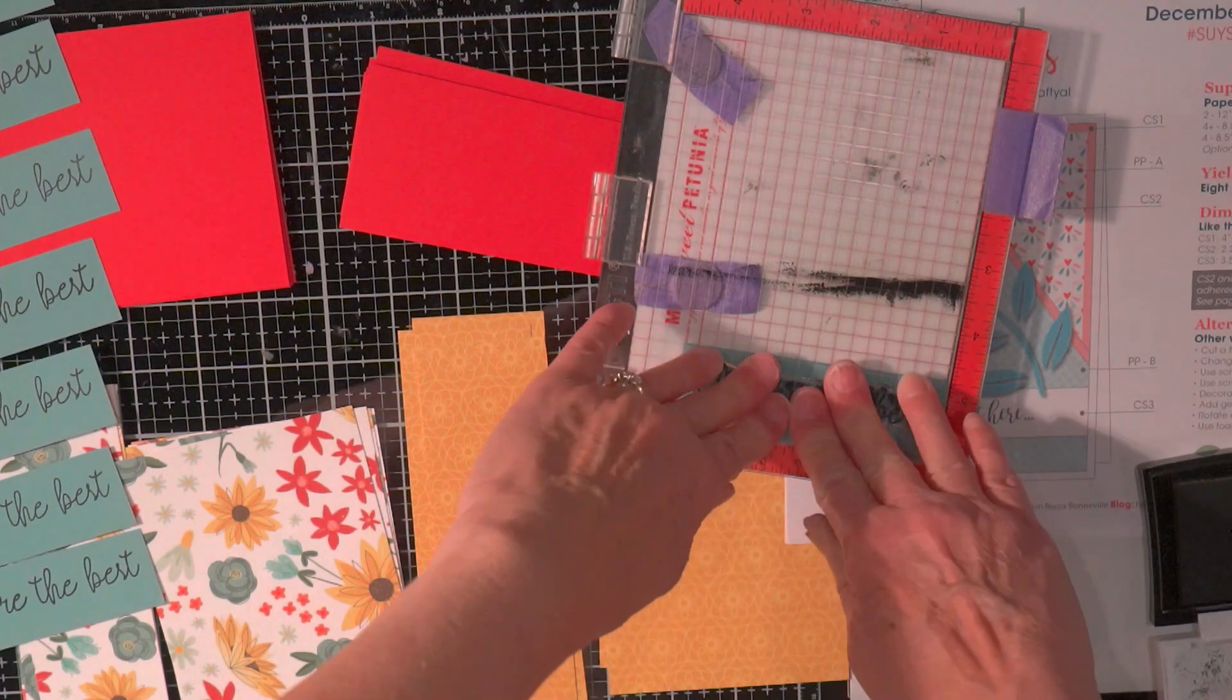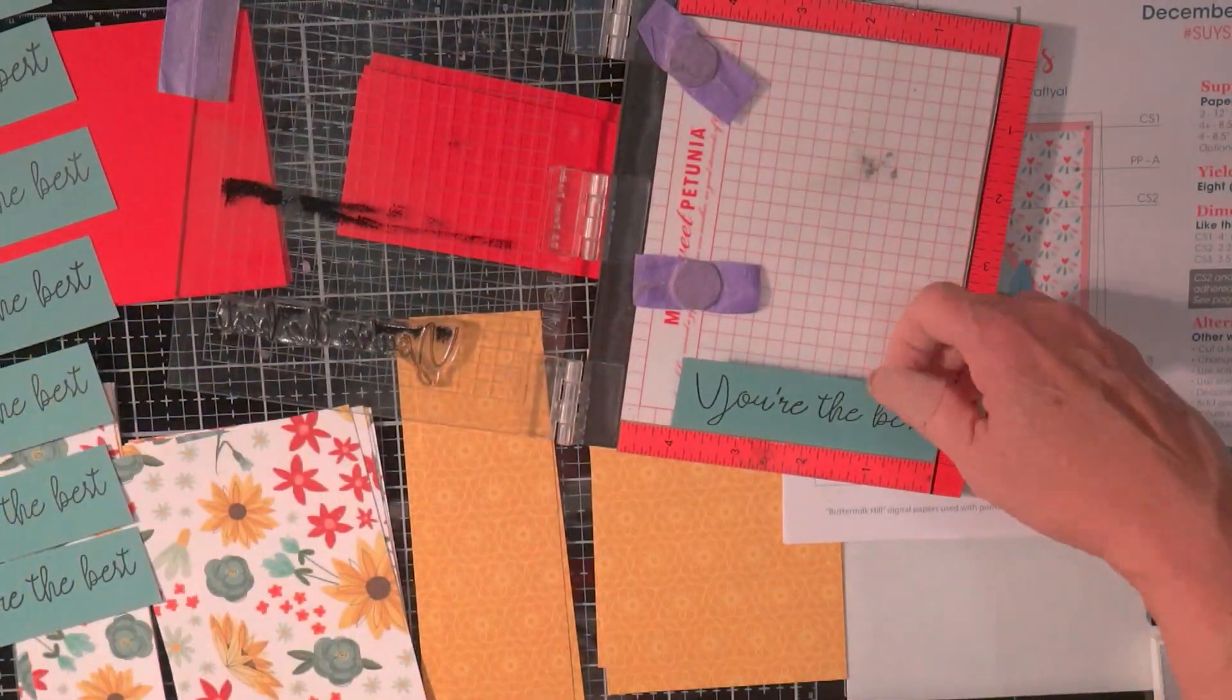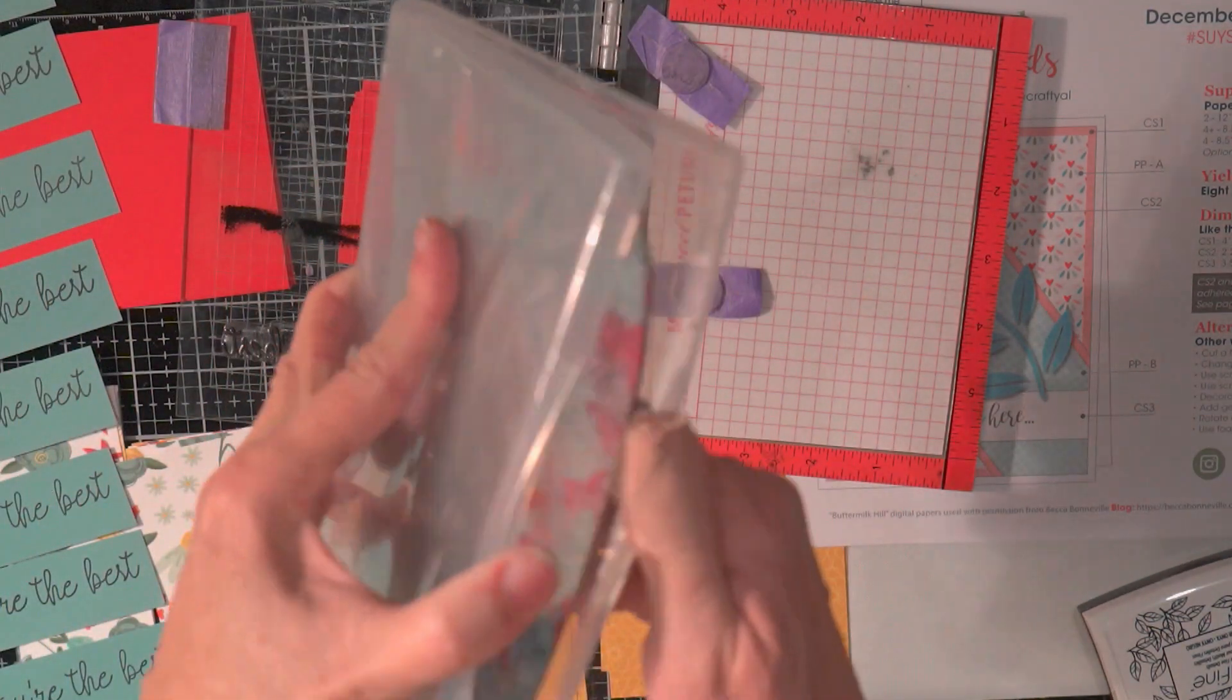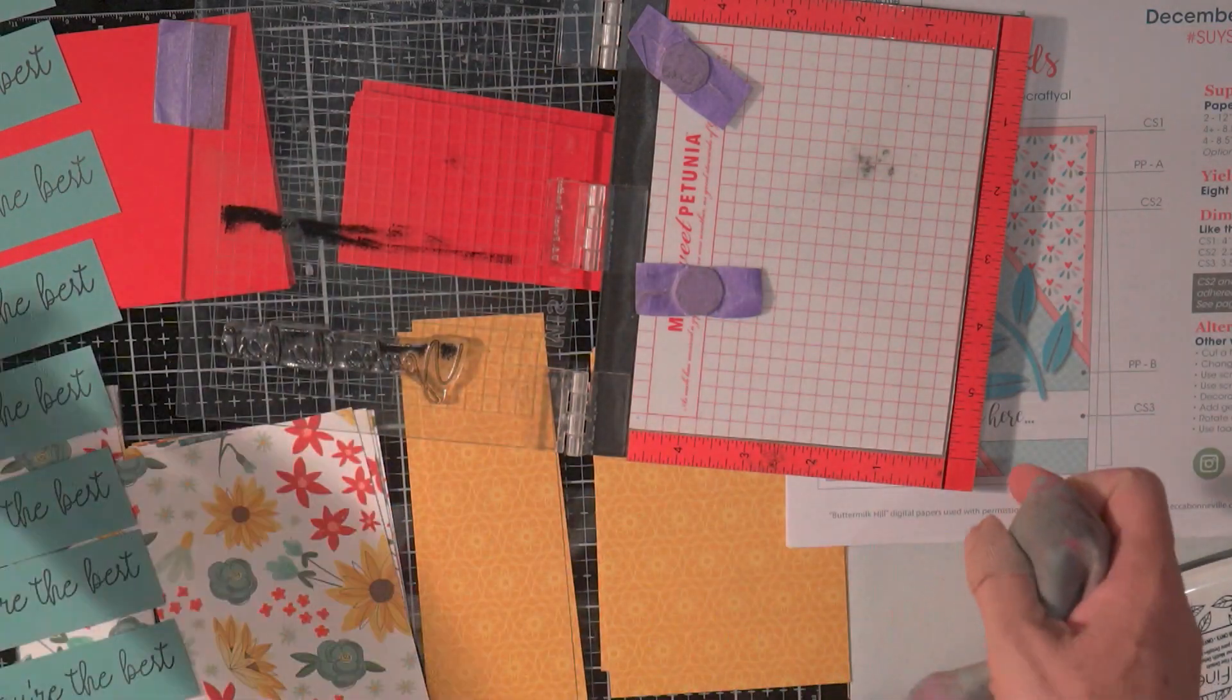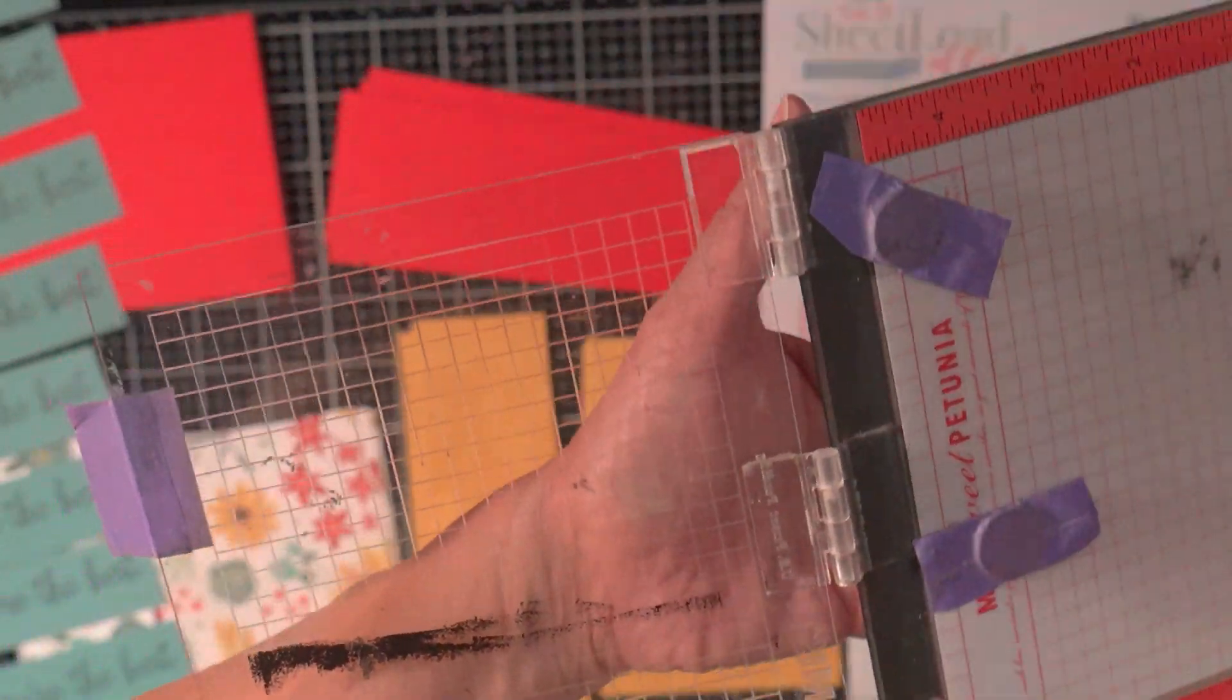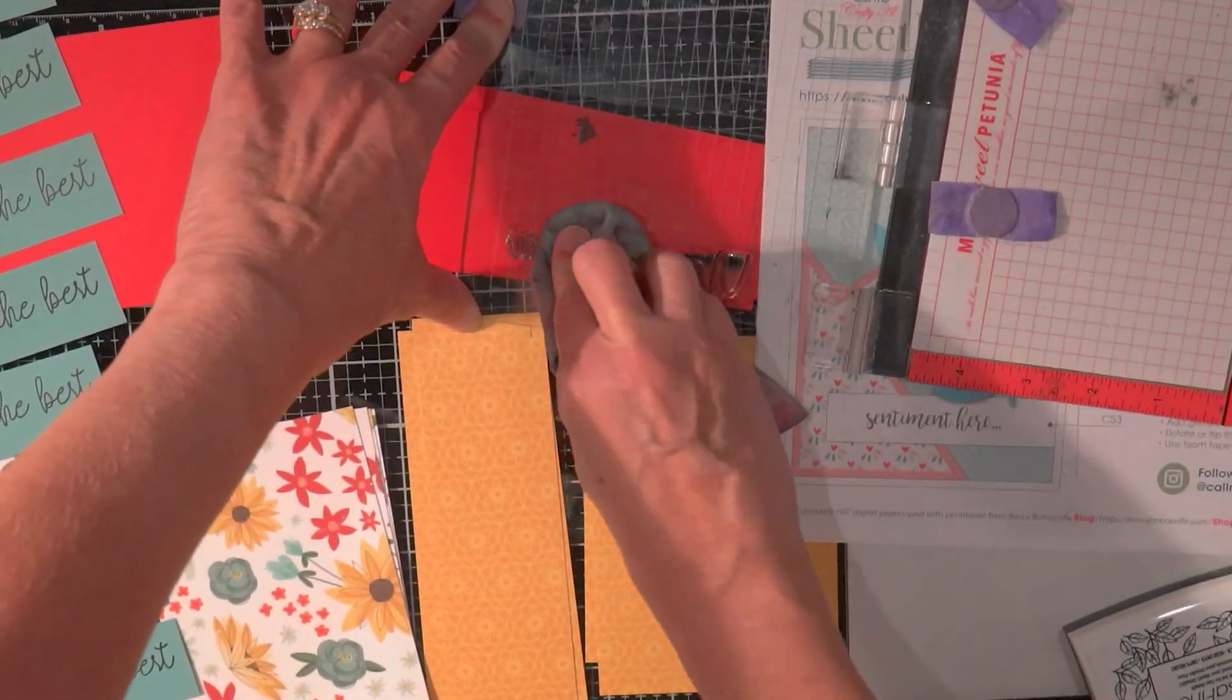Okay the MISTI makes really quick work of that. So got those ready. Okay and then if you've watched my videos before you know that I like to use a stamp chamois to wipe the stamps off. This will really clean the stamps off well.